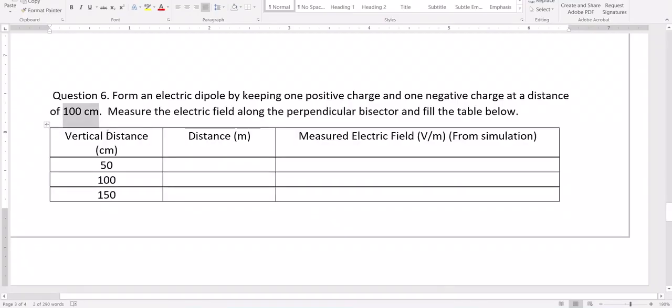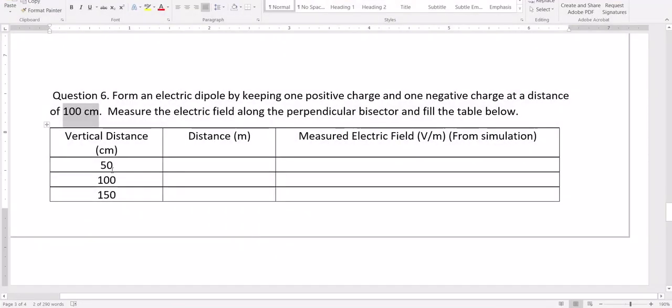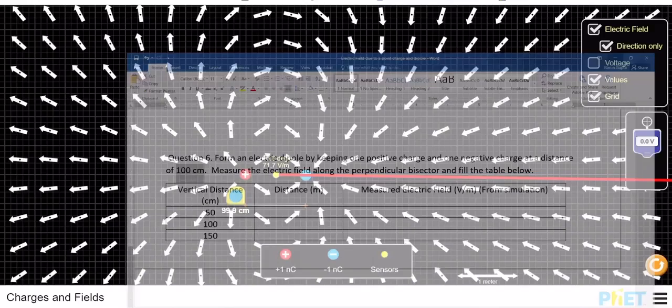First, take this sensor and place it in between here. What is the value of the electric field here at this distance, which is 50 centimeters? The distance between the charges is 100 centimeters, and this is the vertical distance.